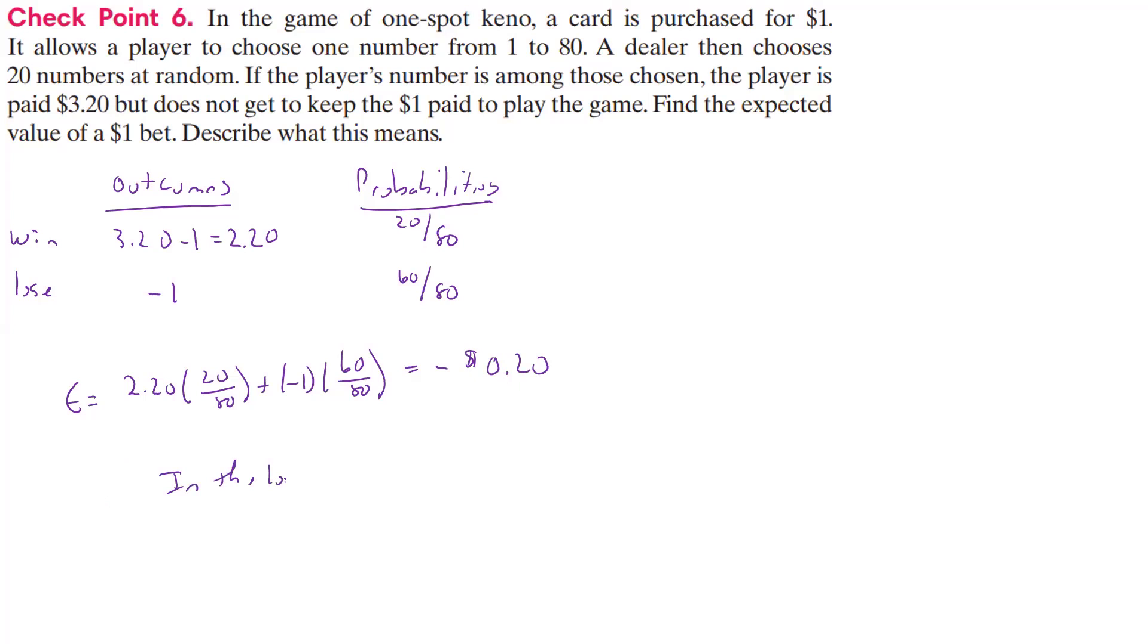So what does that mean? In the long run, lose 20 cents per ticket bought, or I guess card or whatever we do, and these are cards, card purchased. We're playing Keno. Alright, so that helps hopefully for 11.8, and that's all I have for this section.